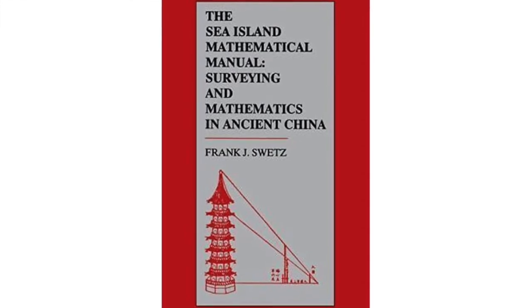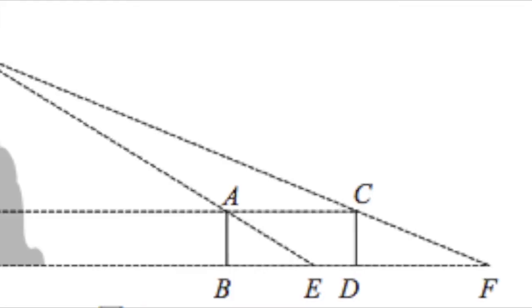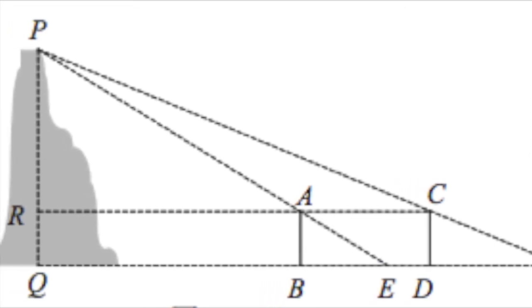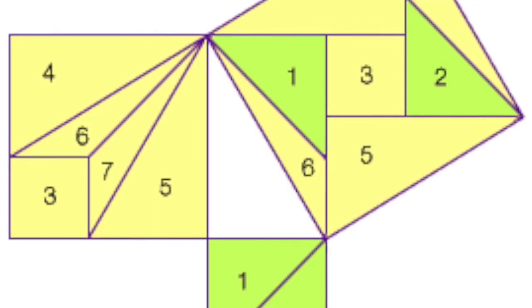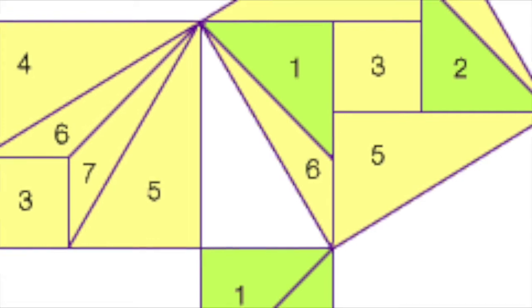Liu also wrote the Haidao Suanjing, which is the Sea Island Mathematical Manual, originally an appendix to his commentary on chapter nine of the Nine Chapters on the Mathematical Art. In it, Liu uses Pythagoras's theorem to calculate heights of objects and distances to objects which cannot be measured directly. This was to become one of the major themes of Chinese mathematics.